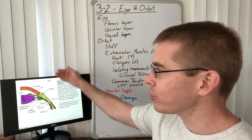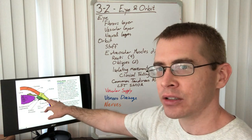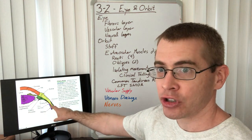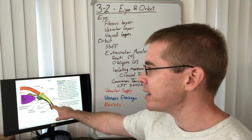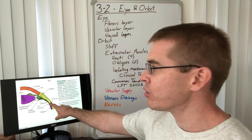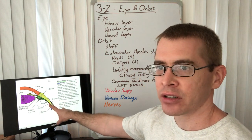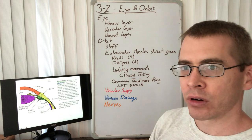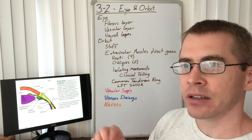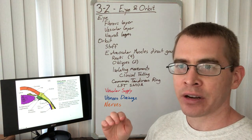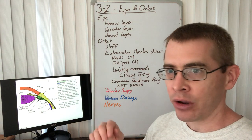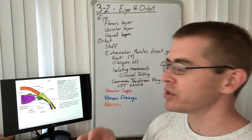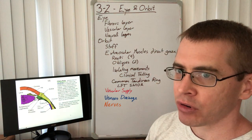Taking a cross-section through the eye and looking at the anterior portion, the retina and the choroid layer extend anteriorly to a point called the ora serrata. At the ora serrata, those layers end and give way to the ciliary body, which is composed of the ciliaris muscle as well as the ciliary processes.